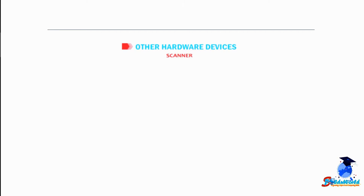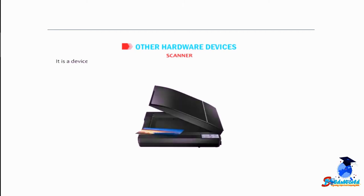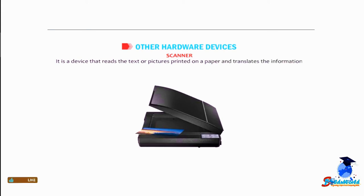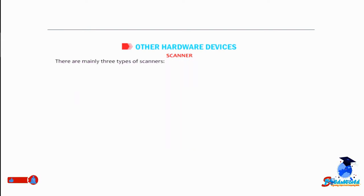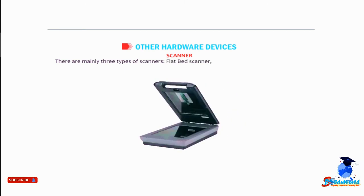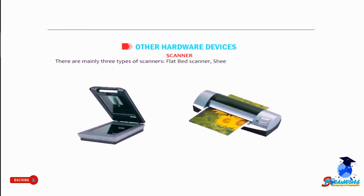A scanner is a device that reads the text or pictures printed on paper and translates the information into a form that a computer understands. There are mainly three types of scanners: flat bed scanner, sheet fed scanner, and handheld scanner.